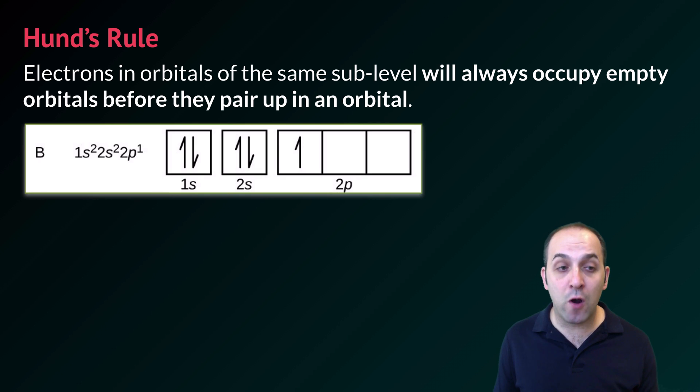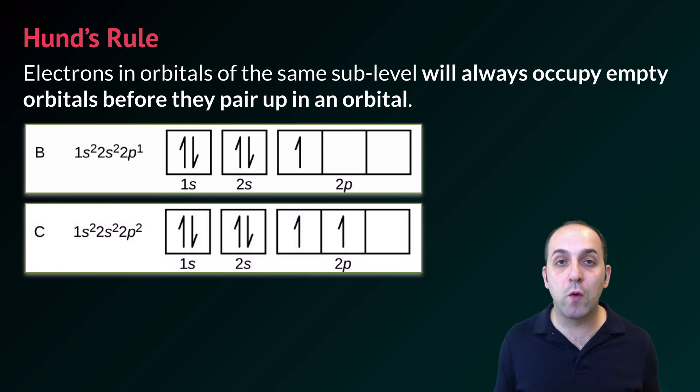So when last we left off, we had boron. If we go up one more, we're going to go to carbon. Notice that in carbon's box diagram, its two electrons in its 2P sublevel are each in individual orbitals. That's Hund's rule. We wouldn't pair them up yet because there are empty available orbitals for unpaired electrons to occupy first.